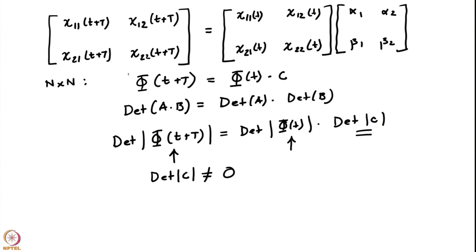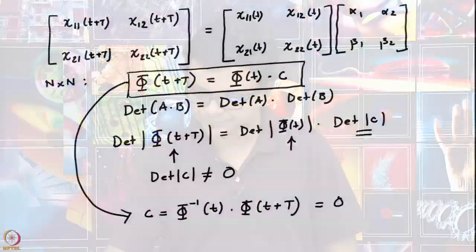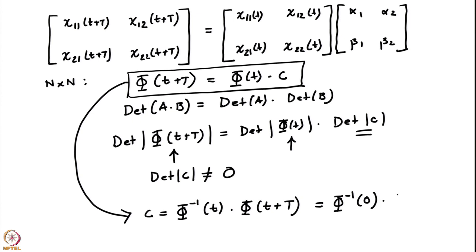What do we gain by doing this? The solutions to this equation — the solutions to our first order system — are related to the eigenvalues of C. From the matrix equation involving fundamental matrices, we can obtain C = φ⁻¹(t)·φ(t+T), since φ has a non-zero determinant and is therefore invertible. If we choose t = 0, this becomes C = φ⁻¹(0)·φ(T), and if we adjust the initial conditions so that φ⁻¹(0) becomes the identity matrix, then C is just obtained by evaluating the fundamental matrix at the time period T.